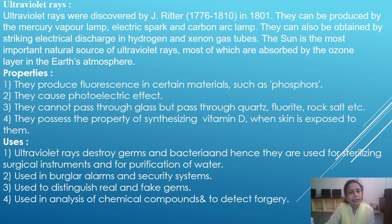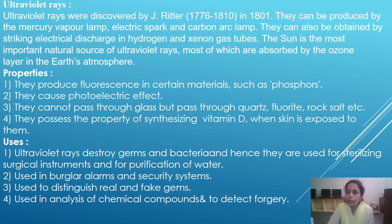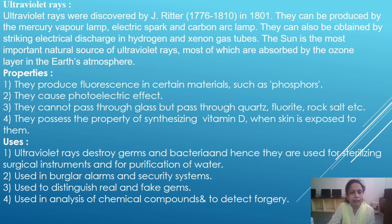Next, ultraviolet rays. Ultraviolet rays were discovered by J. Ritter in 1801. They can be produced by the mercury vapor lamp, electric spark, and carbon arc lamp. They can also be obtained by striking electrical discharge in hydrogen and xenon gas tubes. The sun is the most important natural source of ultraviolet rays, most of which are absorbed by the ozone layer in the Earth's atmosphere.